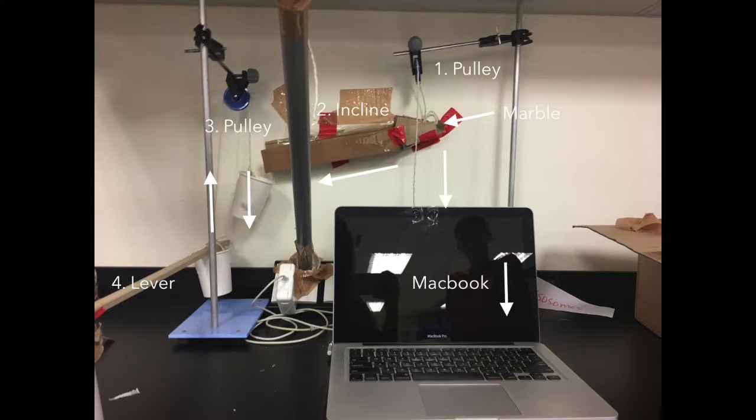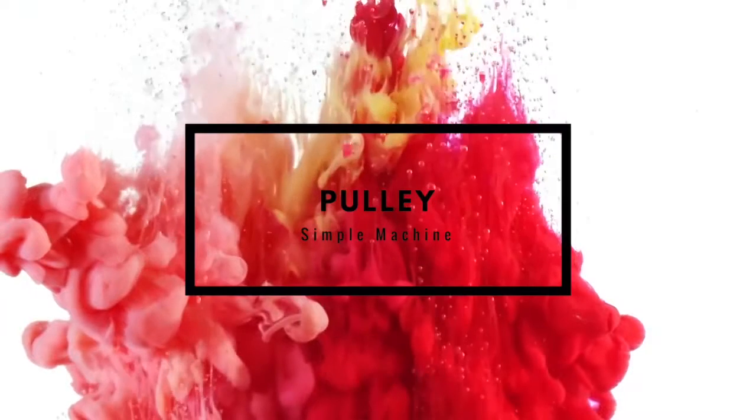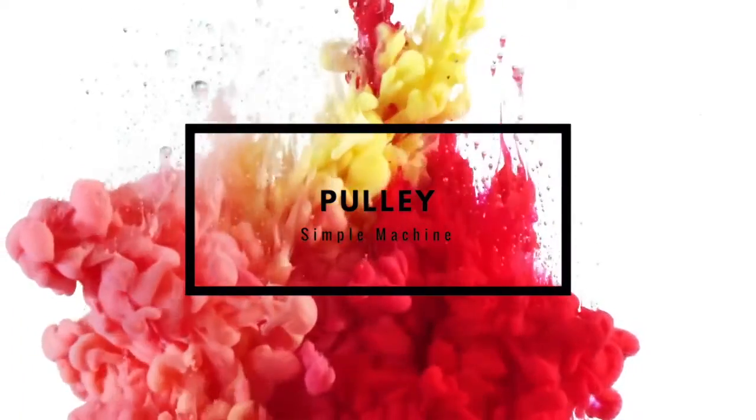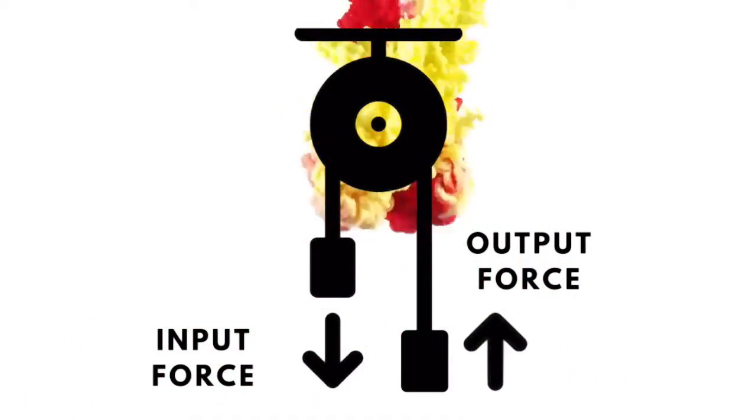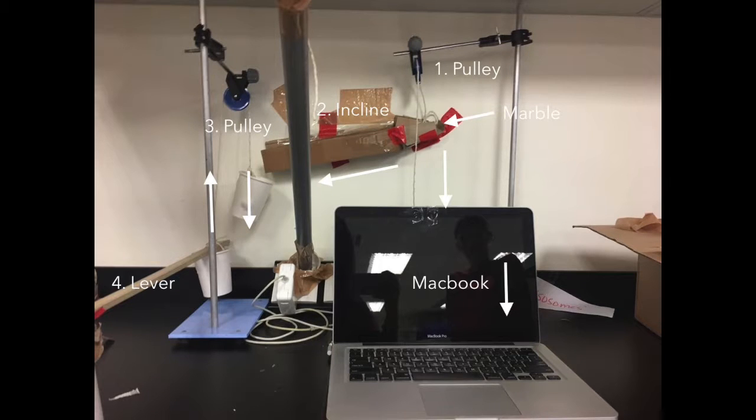The machine is triggered by the closing of a MacBook lid, which is connected to a string on a pulley, the first type of simple machine. A pulley is a wheel with a grooved rim that can turn on an axle. Usually, a piece of string or wire is fitted through the rim. When the MacBook is shut, the string is pulled downwards on one side by the effort, and in turn lifts the load via the pulley. The marble that is balanced on the load drops onto an incline plane.